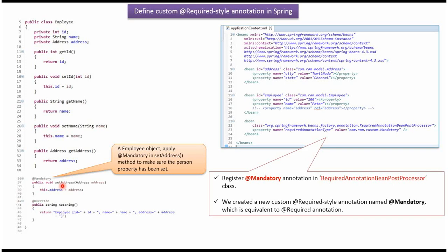If the address object is not set in the employee object, then we will get an exception. To make the at-mandatory annotation work, we have to register it in the required annotation bean post processor. Here we have not set the address object to the employee object, so we will get an exception because we have applied the at-mandatory annotation in the setAddress method of Employee. If you see, this line is commented.